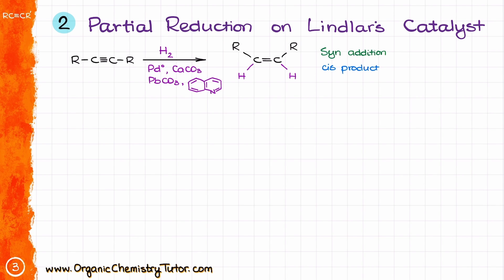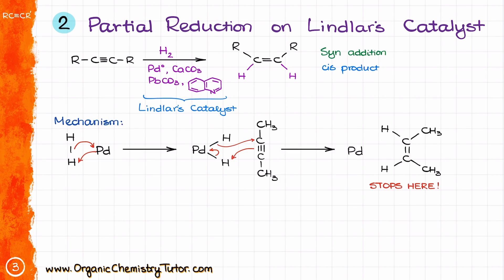What if I don't want to reduce it all the way? In this case, I have a couple of options. One option is the use of Lindlar's catalyst. Lindlar's catalyst is palladium suspended on calcium carbonate and poisoned by lead and quinoline — there are some other versions as well, but lead and quinoline are the most common. This allows the reaction to stop at the formation of the alkene and not go further. Mechanistically, this reaction is exactly the same as the first step of the hydrogenation, but it stops after the formation of the double bond. It is a strict syn addition that yields a cis alkene as the product.